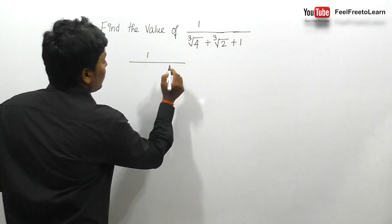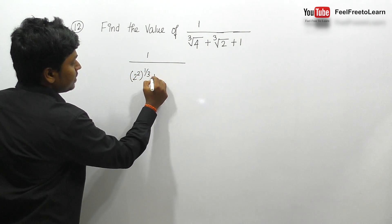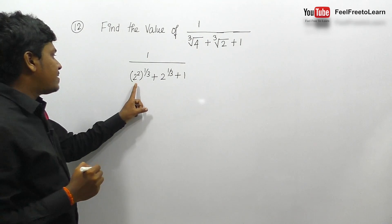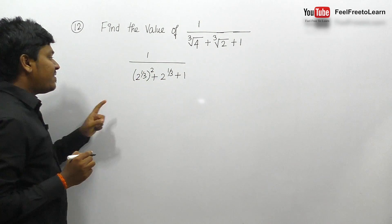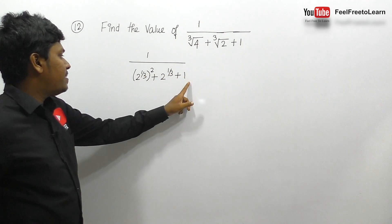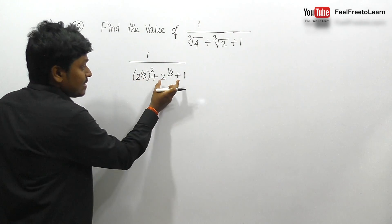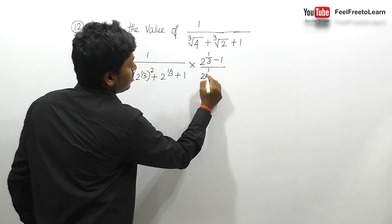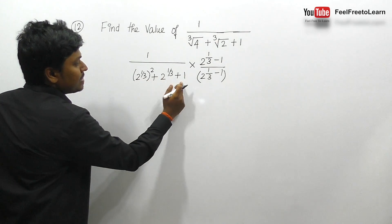I'm going to write this as 1 divided by: 4 can be written as 2², so 2² to the power 1/3, which is 2^(2/3), plus 2^(1/3) plus 1. This looks like a² + a + 1 format where a = 2^(1/3). I'm going to take the conjugate only for the last two terms, multiplying by (2^(1/3) - 1) divided by (2^(1/3) - 1).